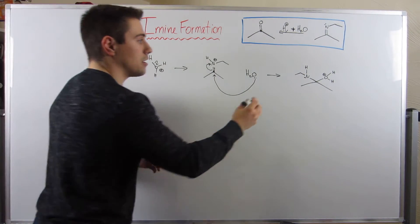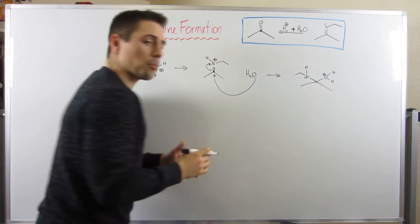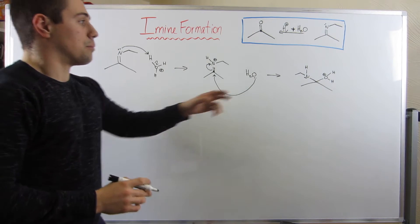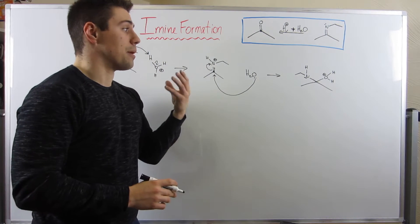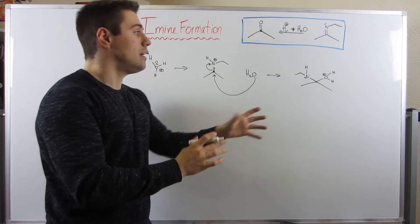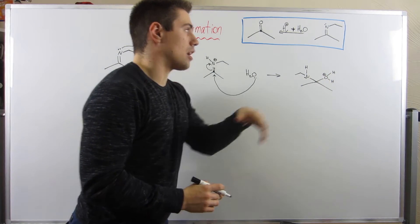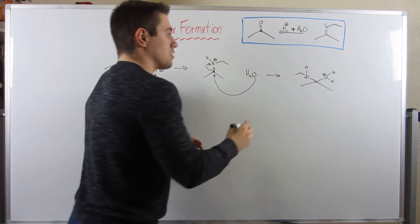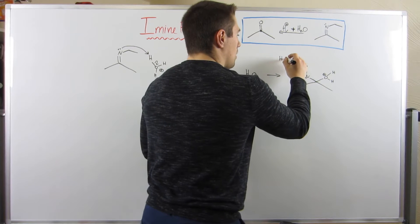So remember, here's the point where we need to play the game, the little proton shuffle. We need to protonate the nitrogen because that will make him a better leaving group. We can then kick him off, and then we need to deprotonate the oxygen because we want to keep him around.